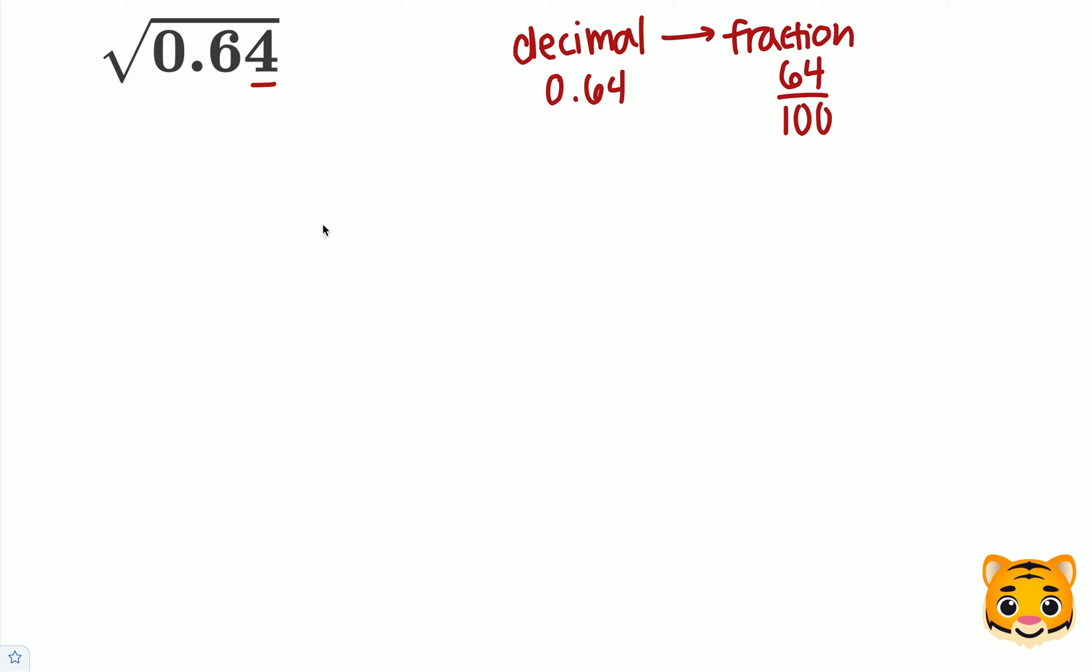Now, we can rewrite the square root of 0.64 as 64 over 100 inside of our square root. So before we move on, we need to review an important math rule.